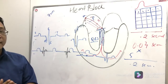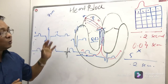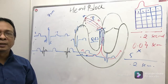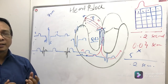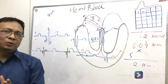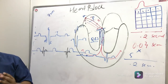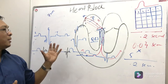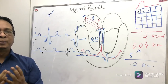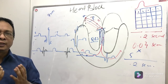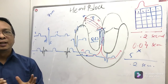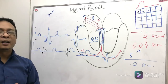Heart block is a type of arrhythmia when the heart misses a beat. First degree heart block is usually asymptomatic. Mobitz Type 1 and Type 2 may require a pacemaker. Third degree heart block requires immediate intervention, as the ventricles missing beats means blood is not being pumped to the brain, causing symptoms like fainting, dizziness, and shortness of breath.